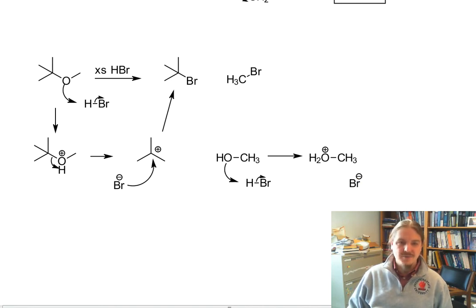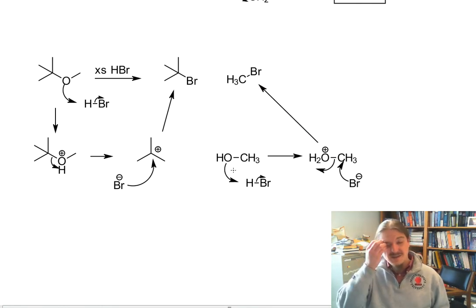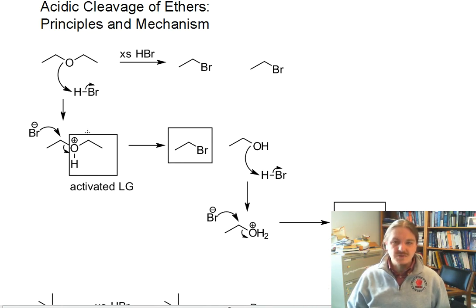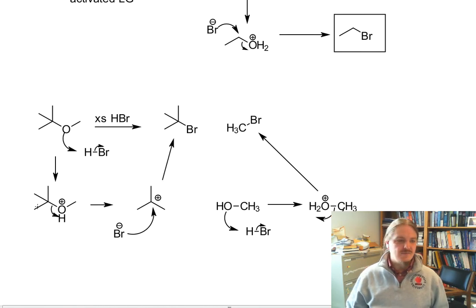And we can get an SN2 reaction here because this is a methyl substrate. But at least we can see the differences. So two different possible mechanisms: SN2 all the way if we have primary methyl, low substituted hydrocarbons on either side. SN1 can occur for secondary and tertiary groups on one or both sides of the ether.